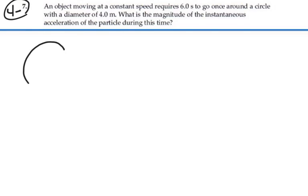Let's take a look at what we have here. We have a circle, and the diameter is four meters, so the radius is two meters, and we know that the time around the circle is six seconds.